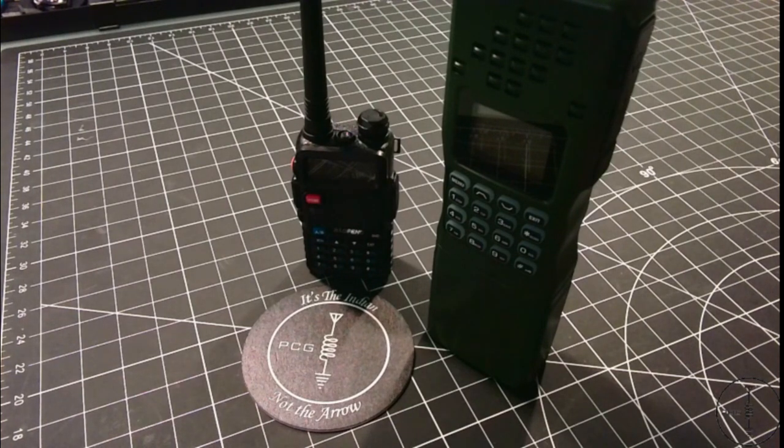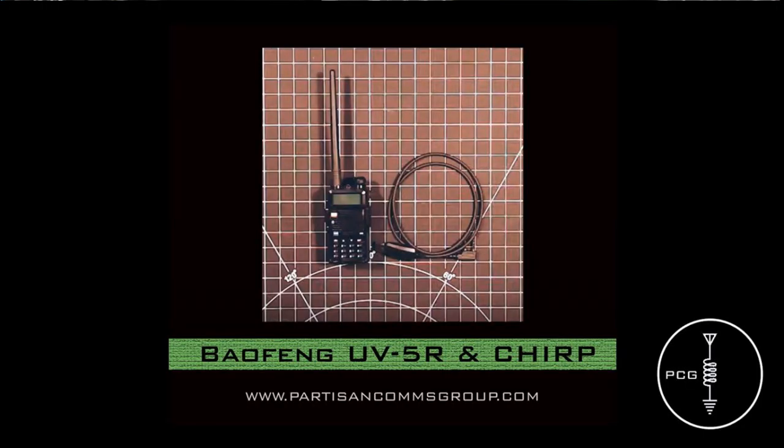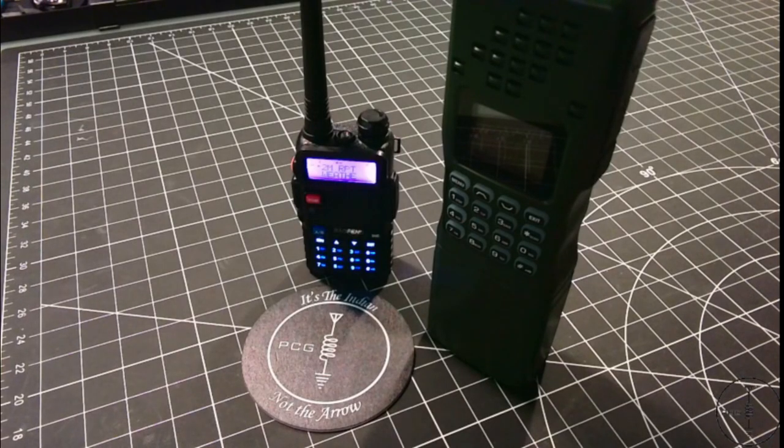I didn't have any issues programming the AR-152 with Chirp Next or selecting the UV-5R menu option, and if you're interested in the steps to programming a UV-5R or an AR-152, then check out episode 3. Although the version of Chirp I'm using in that episode is the older Chirp Daily version, the concept is the same as it is with Chirp Next. So I've confirmed each radio is functioning as expected, and I'm able to transmit and receive, and we will now move on to the sand test.